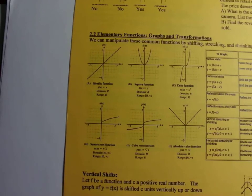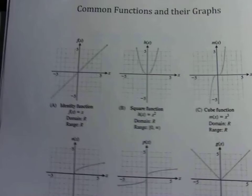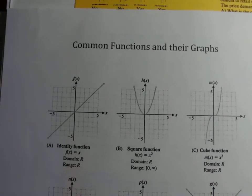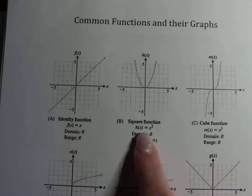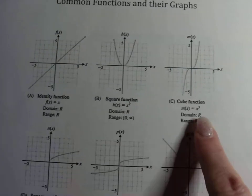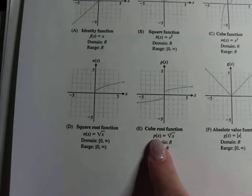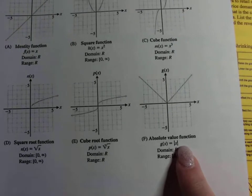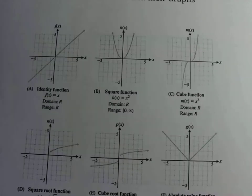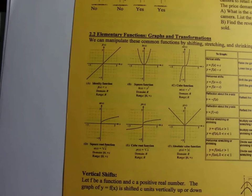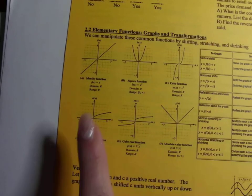We're going to talk about elementary functions, graphs, and transformations. First, we'll look at some basic graphs: the identity function where y equals x, the square function which is our basic parabola, the cubed function, the square root function, the cube root function, and the absolute value function. Those are the basic graphs we'll be looking at and transforming, and for the most part we'll look at parabolas.